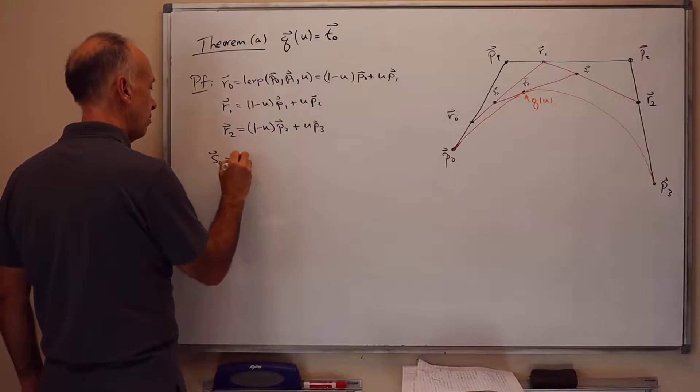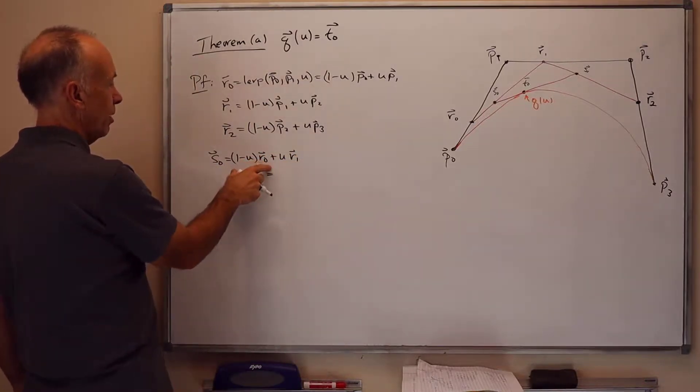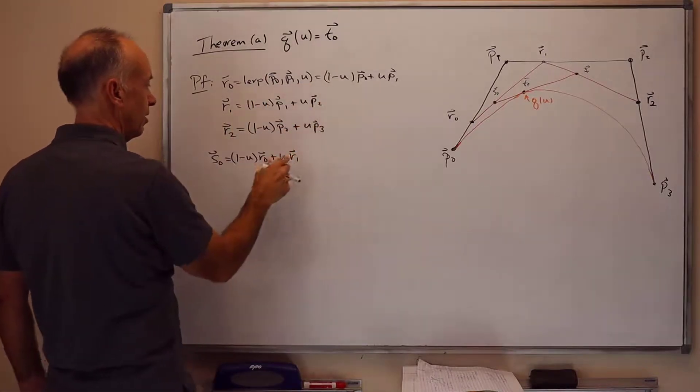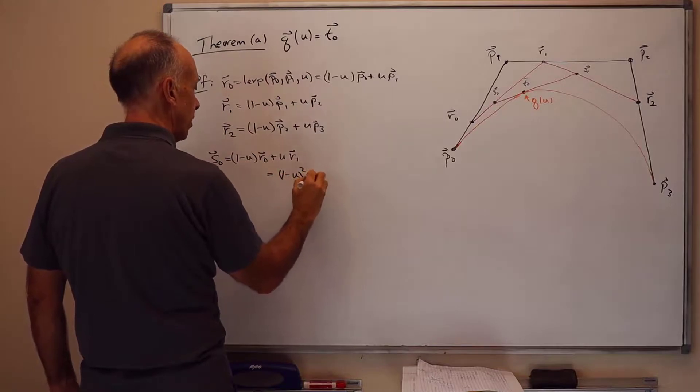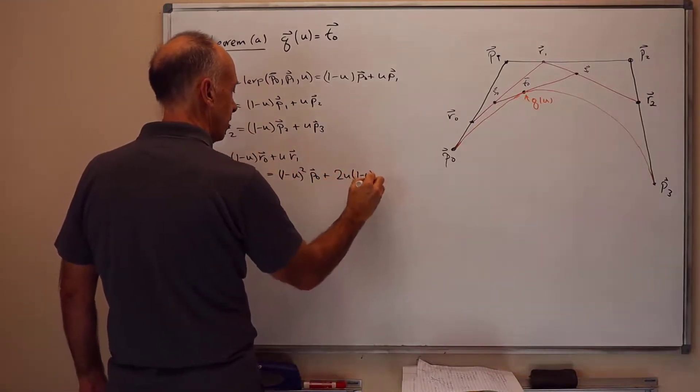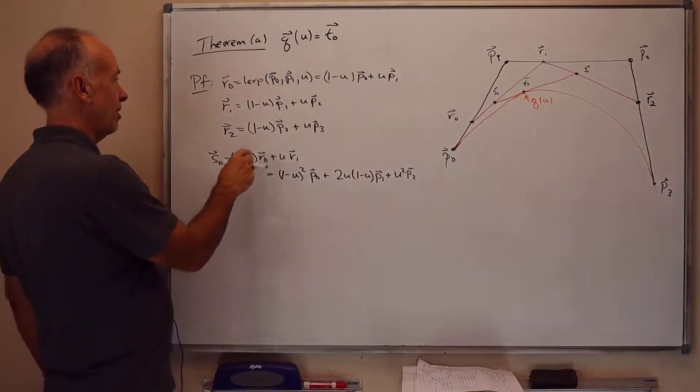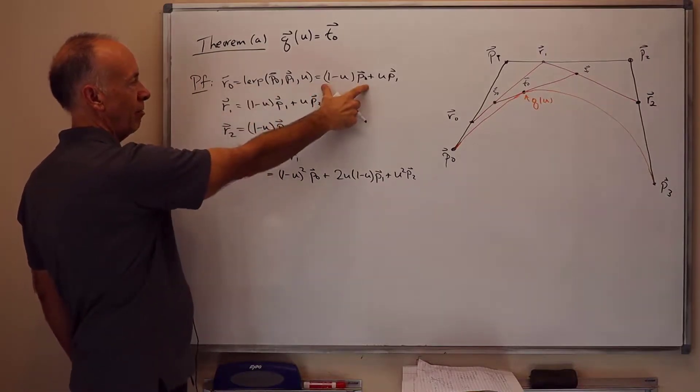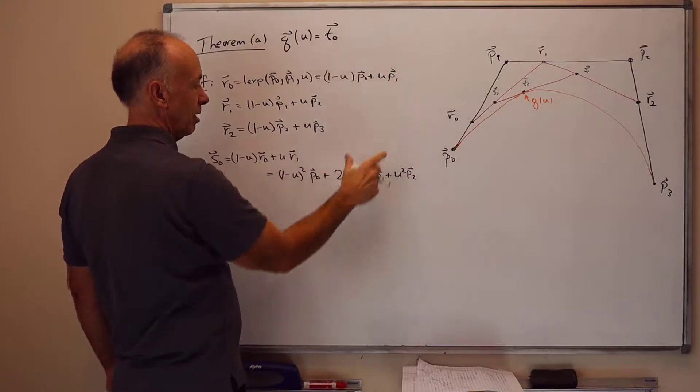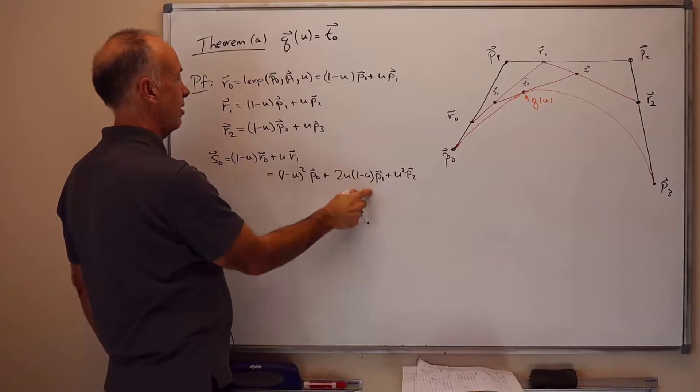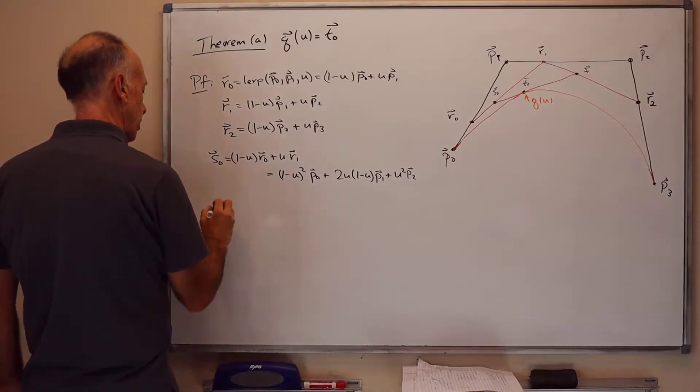So that gives us the formulas for the R's. Now for the S's, S0 is (1 - U) times R0 plus U times R1. And when you expand this out and group coefficients, we get (1 - U)^2 times P0 plus 2U times (1 - U) times P1 plus U^2 times P2. You might want to pause the video and check this, but notice, for instance, we've got (1 - U) times R0 gives us the (1 - U)^2 times P0. And the (1 - U) times R0 also gives us the (1 - U) times P1. So that's one of the factors U times (1 - U) here. The second one comes from the U times R1, which includes the (1 - U) times P1, and so forth.